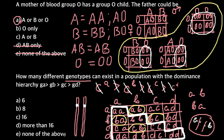So the answer would be 10. But we don't have that answer here — we have 6, 8, 16, more than 16, and none of the above. So the correct answer is E: none of the above, because the correct answer is 10. So 10 different genotypes are possible here.